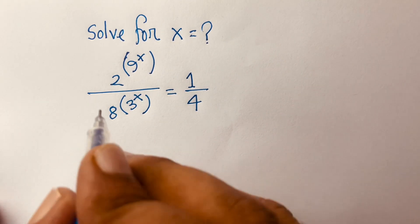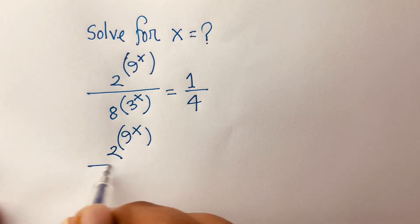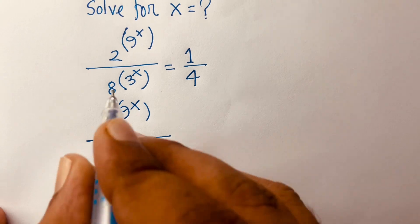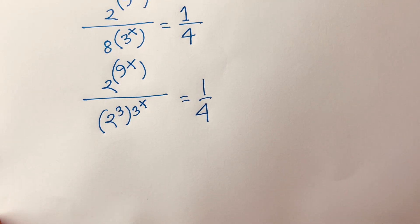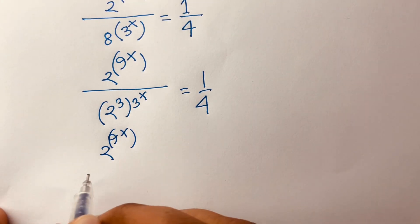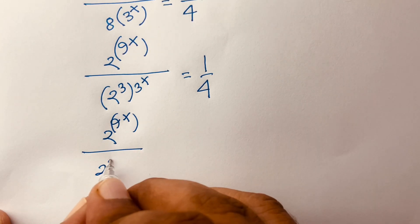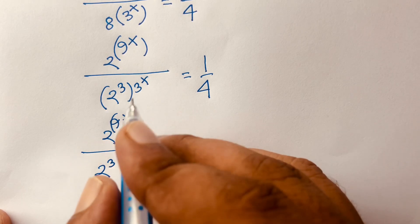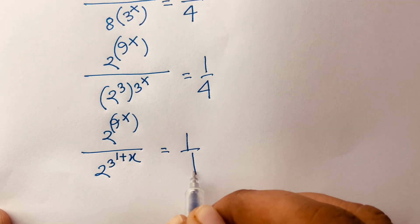First of all, I can write 2 to the power 9^x over 8, where 8 is rewritten as 2 to the power 3, bracket to the power 3^x, is equal to 1 over 4. Then I can say it will be 2 to the power 9^x over 2 to the power 3, and this exponent becomes 1 plus x, according to exponential rules, so we have 2^(9^x) over 2^(3(1+x)) equals 1 over 4.